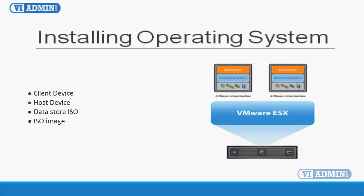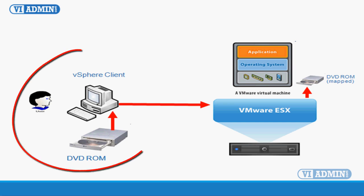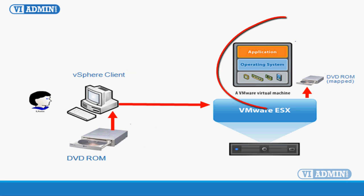There are four ways to put an operating system on our blank server. The first one is to install the operating system using the client device option, which basically means you insert the DVD into your local workstation DVD ROM and ESX server maps that device to the VM so that the VM can boot off that DVD media.